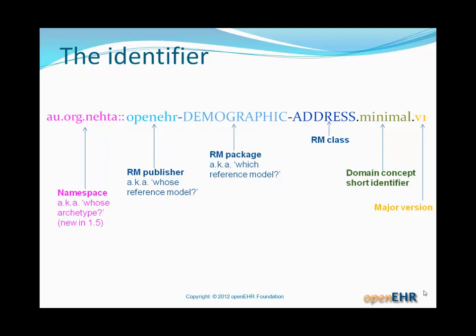In ADL 1.5, we've added in the namespace part of the identifier. It's an optional part, and you can think of this as 'whose archetype'. The part in the middle is whose reference model; this namespace part is whose archetype. This enables two different organisations who might build their idea of, for example, a blood pressure archetype based on exactly the same reference model. The namespace is how we distinguish an Australian version, a UK version, and a Swedish version of the blood pressure archetype. UIDs can also be used and may become mandatory in the future.